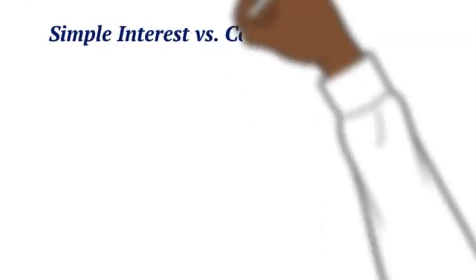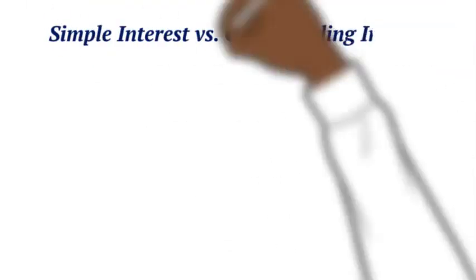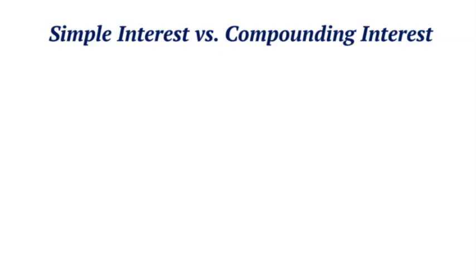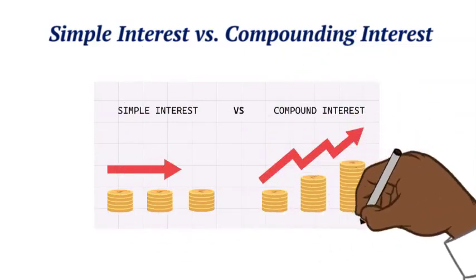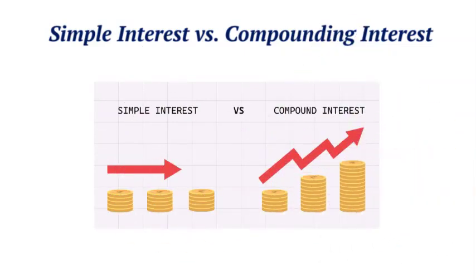There are two types of interest you can earn: simple interest and compounding interest. Simple interest is when you earn interest only on your principal, whereas compounding interest is where you earn interest on both your principal and your interest.